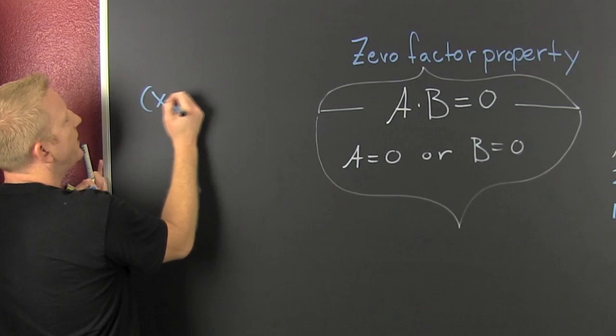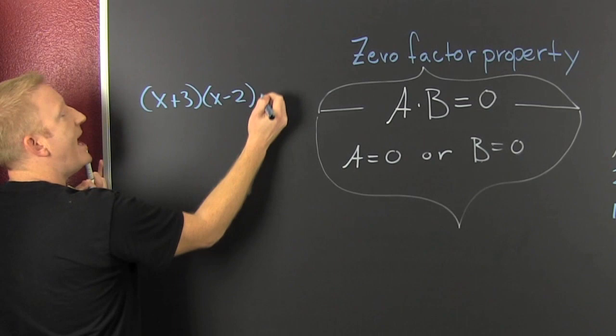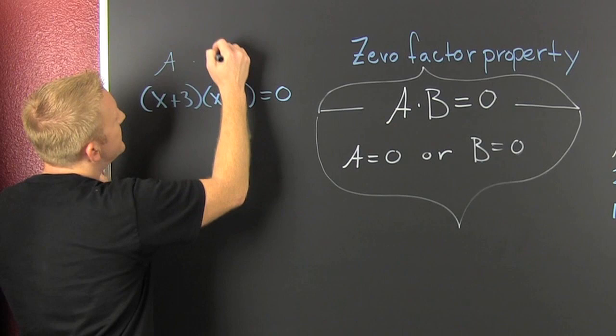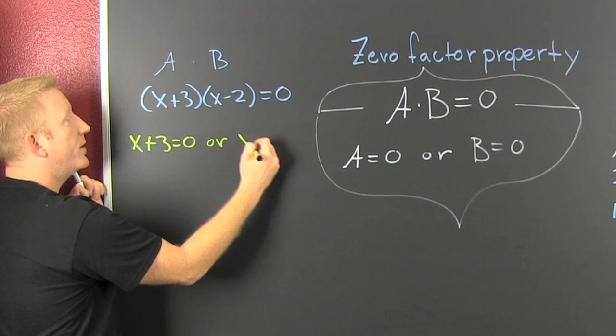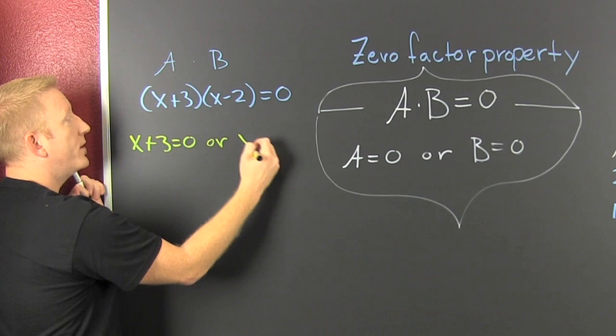I'll apply this over here. If I had x plus three times x minus two and that was equal to zero, then you have two things multiplied together and that product is equal to zero. So you separate the two. You say that x plus three is equal to zero or x minus two is equal to zero, and x is equal to minus three and two.